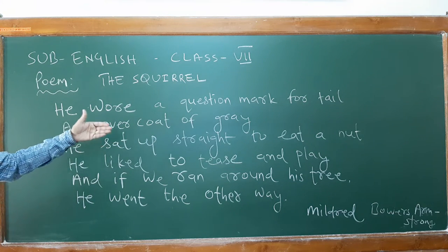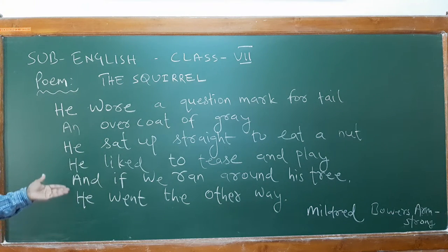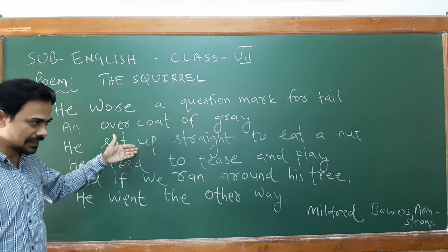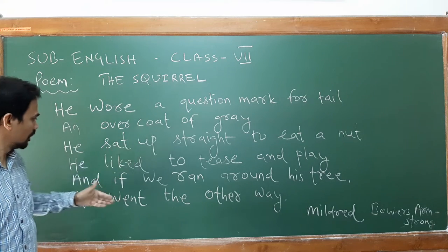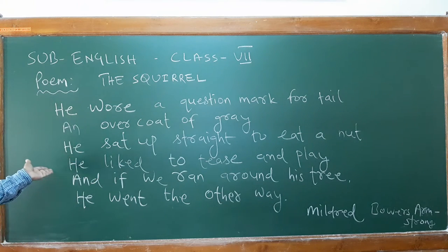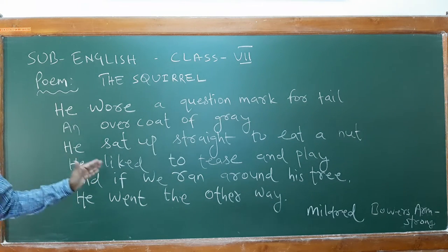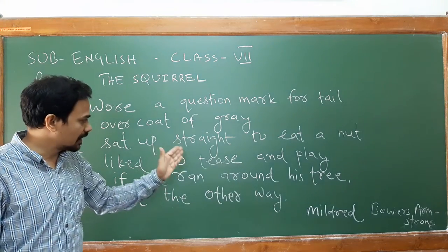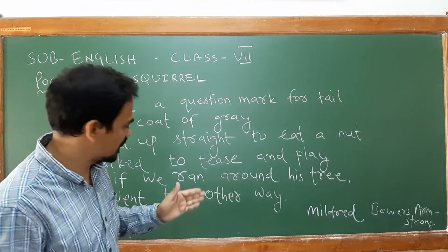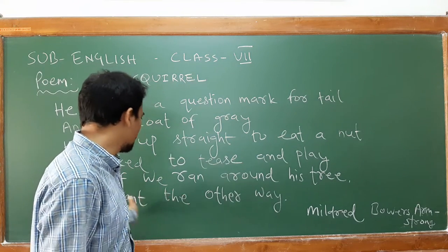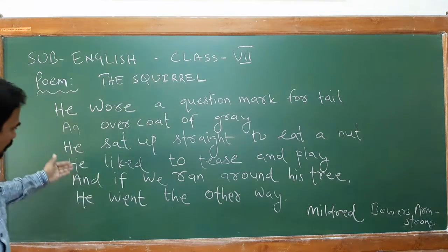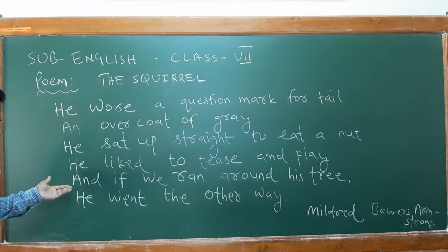The third line reads: 'He sat up straight to eat a nut.' How does the squirrel sit here? He sits up decent and plays. Whatever the nature of the squirrel, if he ran around his tree, he went the other way. So wherever somebody is running around the tree, we have to see what the squirrel actually does.